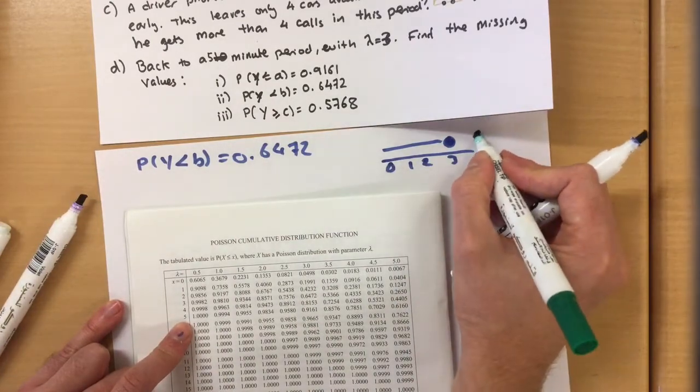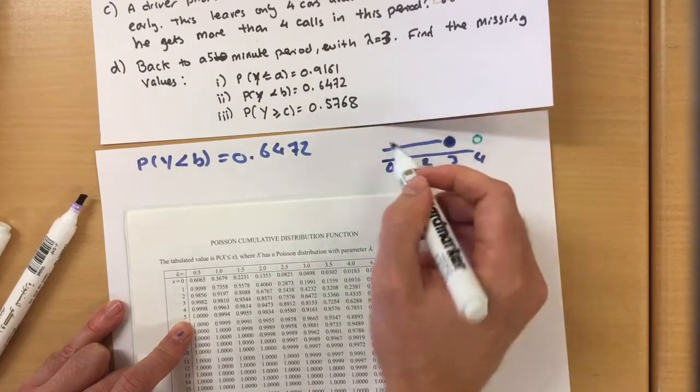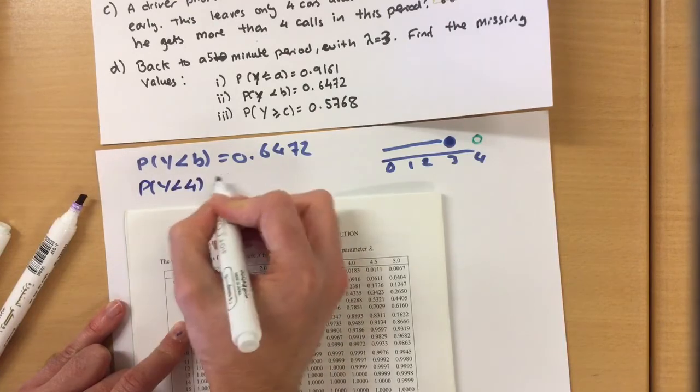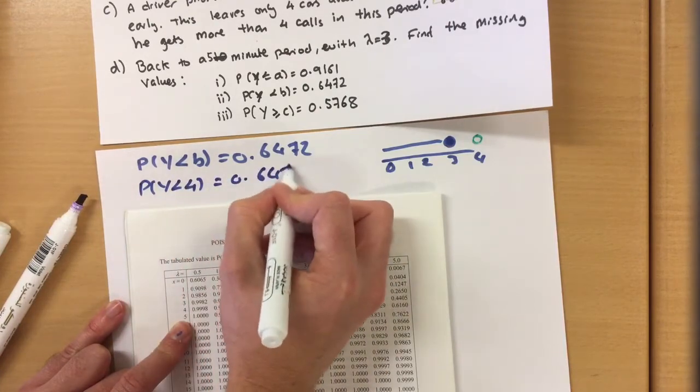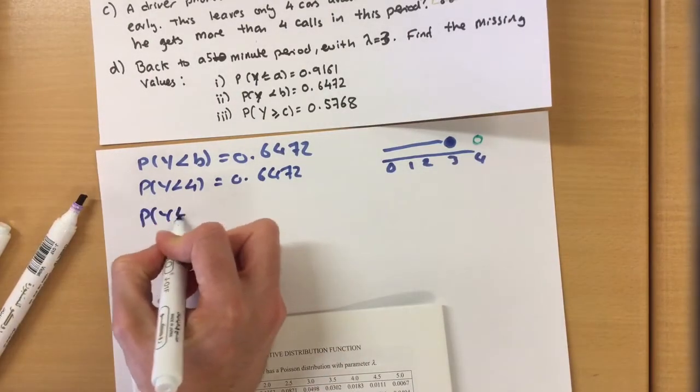We're looking at less than 4, because anything less than 4 includes our 3, 2, 1, and 0. So probability that Y is less than 4 is 0.6472, which is the same thing as saying less than or equal to 3.